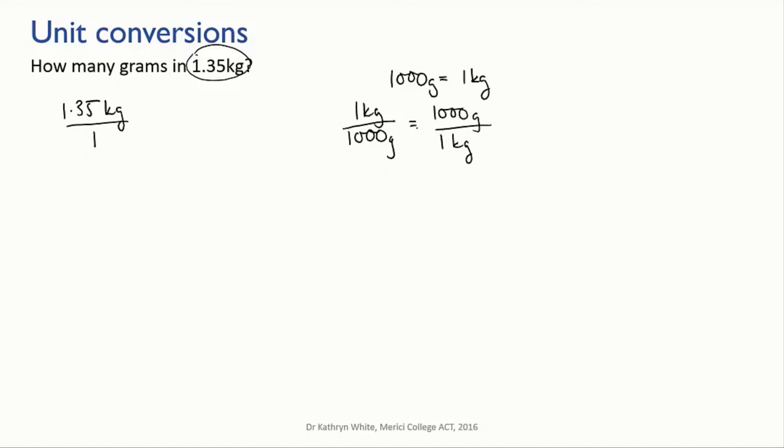So I want to apply this conversion factor to my mass. But the thing that sometimes trips people up in these calculations is whether to multiply by 1,000 or divide by 1,000. Which way up should the conversion factor go? So here's the trick.